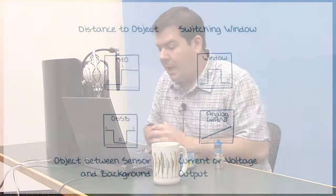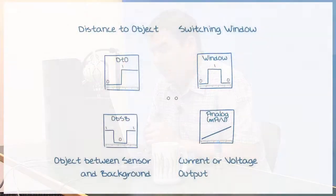After the distance measurement sensors measure the distance to the desired target, the sensor processes that information into the output desired by the customer's automation system. Many output options are available. Choose from simple switching and window mode outputs to analog, serial, and bus style outputs.